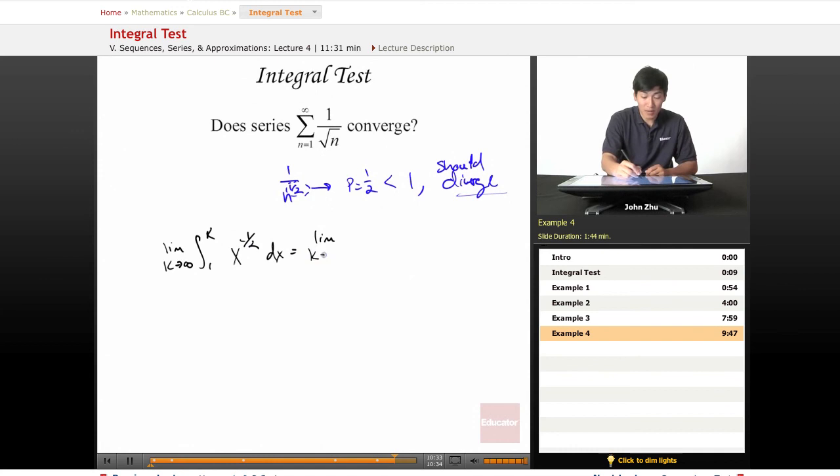We have the limit as k approaches infinity of 2 times x to the 1 half evaluated from 1 to k. So we get the limit as k approaches infinity, 2 times the square root of k minus 2 times the square root of 1, which is just 2.